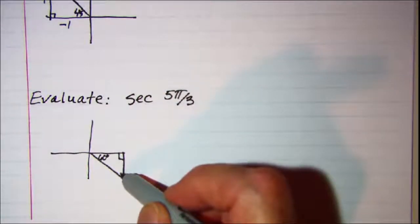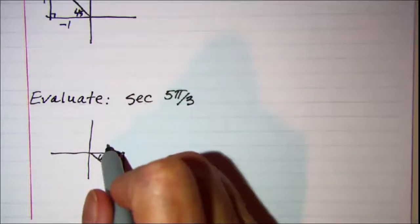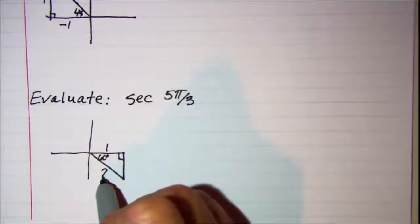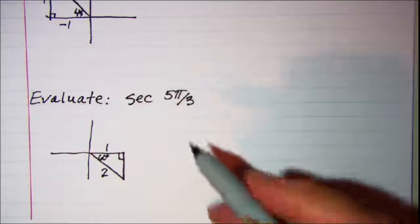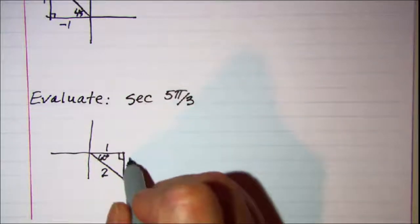This one is 60 so this angle is 30. So we have a 1 and my hypotenuse is always 2 for a 30, 60, 90 triangle and then this one is a root 3.